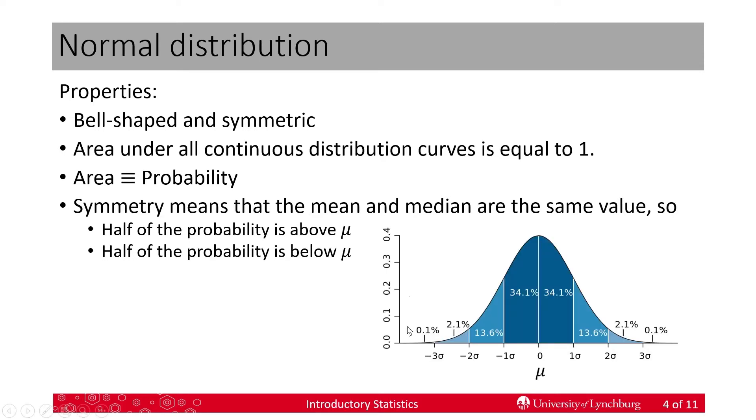Now, symmetry means that the mean and the median are the same value. That's true for all symmetric distributions. That results in mu having the same properties as the median. So, here is mu in the center. The area to the left of mu will be 0.5 and the area to the right of mu will be 0.5. But even more importantly, if we go out one standard deviation to the left and one standard deviation to the right, the area here is the same as the area here. So, if we go the same distance away from mu in the two directions, we're going to have the same areas.